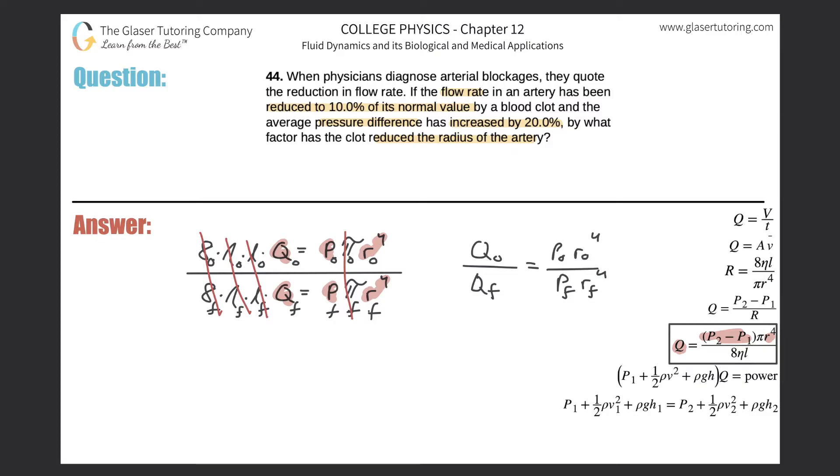I have this ratio that Q_O over Q_F is going to be equal to P_O times R_O to the fourth divided by P_F times R_F to the fourth.